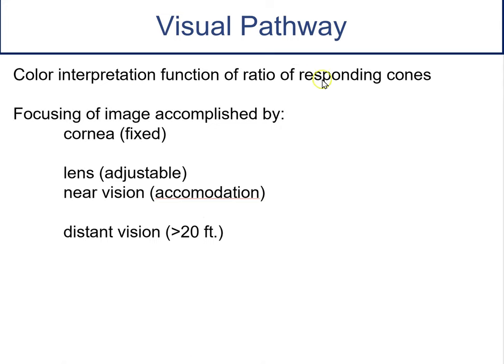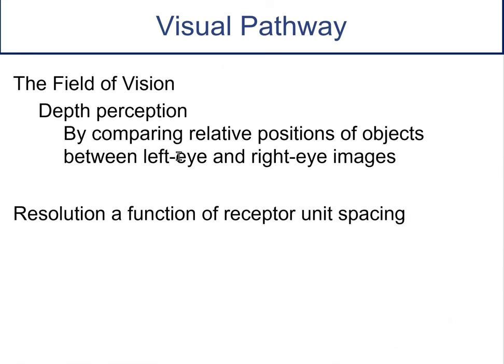Color is determined by the ratio of cone activation — the cones overlap to give us all of our colors. Focusing is due to the cornea, which is fixed, and the lens, which can accommodate by changing its shape for near vision or flattening out for distant vision. For depth perception, we need two eyes — covering one eye makes it really hard to judge depth. Resolution is determined by how closely spaced the receptors are.